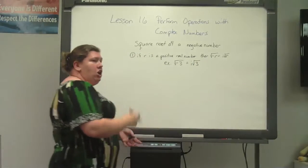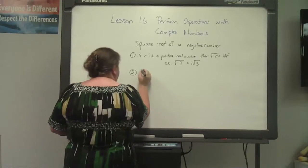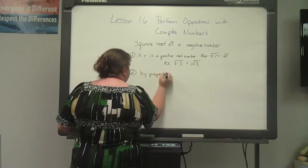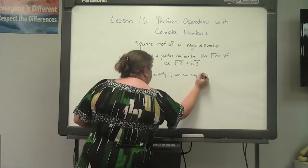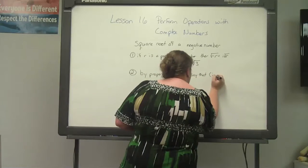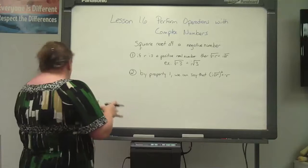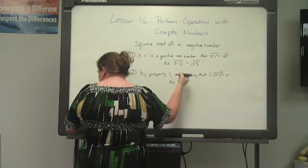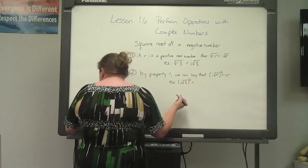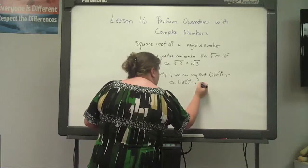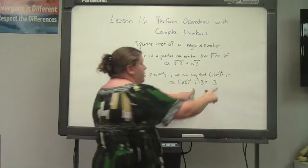Because that i gets rid of the negative under the radical sign. The second property says that i times the square root of r, squared, equals negative r. For example, using negative three: we found i square root of three, and squaring that gives i squared times three, which equals negative three — because it becomes negative r.